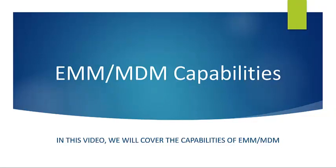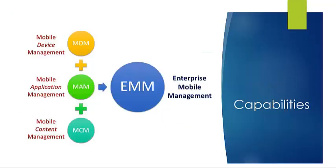There are different MDM features with different functionalities, and in the coming videos we'll talk about what makes one MDM solution different from another. The main capabilities of MDM comprise three things: mobile device management, mobile application management, and mobile content management. Together, these make up an enterprise mobility management solution — EMM is just the more modern term for MDM that covers everything on screen.